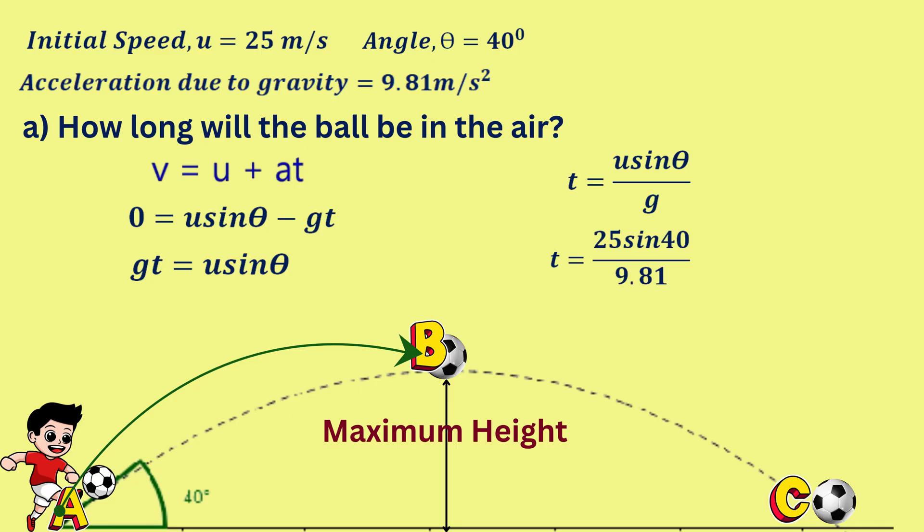u is 25 meters per second, theta is 40 degrees and gravitational acceleration is 9.81.